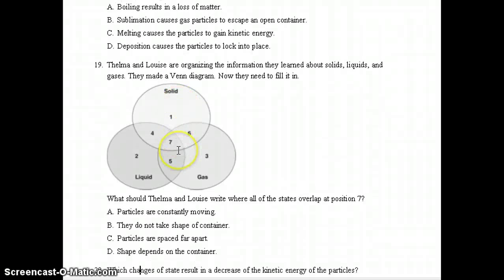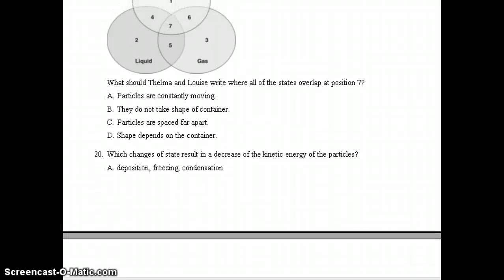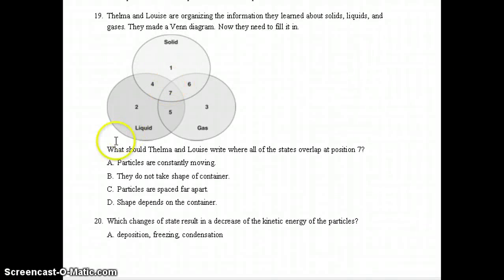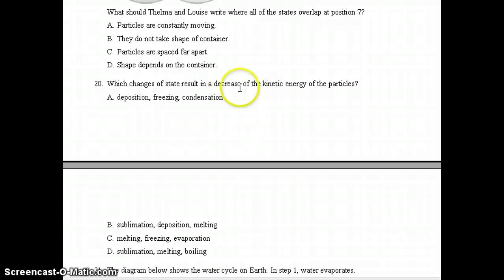Number 19, Thelma and Louise are organizing the information they learned about solids, liquids, and gases. They made a Venn diagram. Now they need to fill it in. What should Thelma and Louise write where all of the states overlap at position 7? Right here in the middle. The correct answer should have been letter A. Particles are constantly moving. Number 20, which changes of state result in a decrease of the kinetic energy of the particles? So if it's a decrease of kinetic energy, remember kinetic energy is the energy of motion. So if it's decreased, that means the particles would be slowing down and not moving as much. And it looks like that would be letter A, deposition, freezing, condensation.